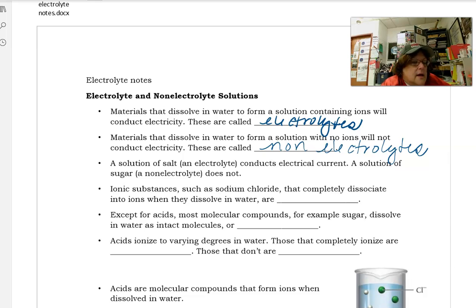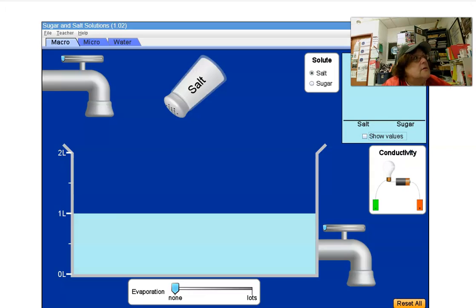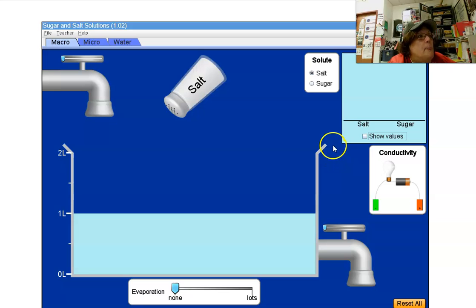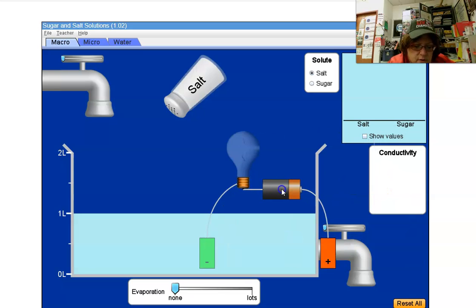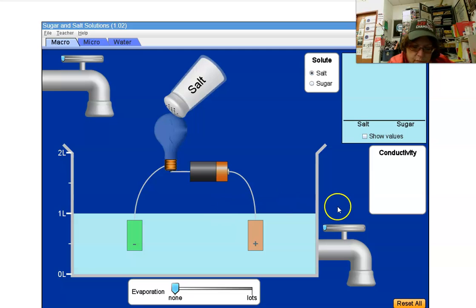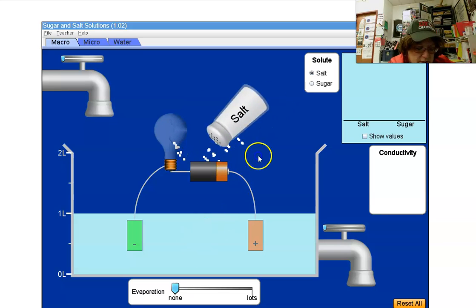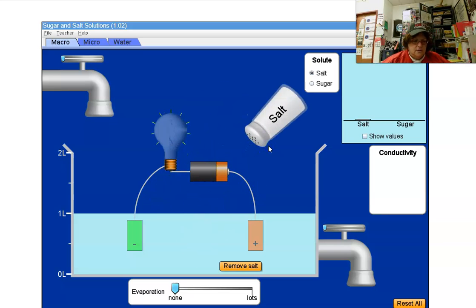Now we're going to look at a simulation from the PhET program, University of Colorado. We have a conductivity meter here, so I'm going to move the conductivity meter over here into the water. You'll notice the light is not on. But if I start to put salt into the solution, you can start to see the light is starting to light up.